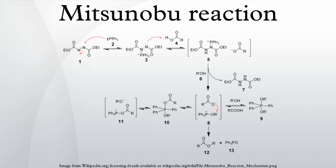The ratio and interconversion of intermediates 8 to 11 depend on the carboxylic acid pKa and the solvent polarity. Although several phosphorus intermediates are present, the attack of the carboxylate anion upon intermediate 8 is the only productive pathway, forming the desired product 12 and triphenylphosphine oxide.